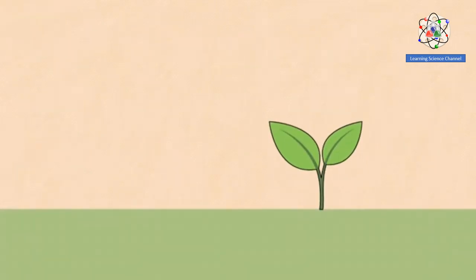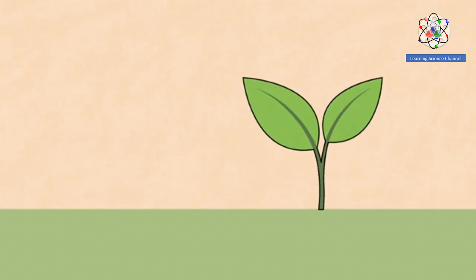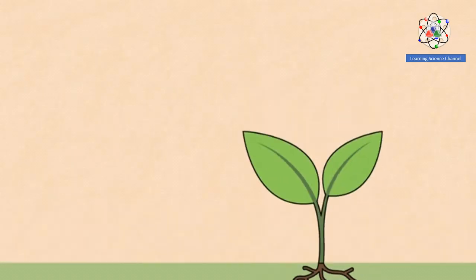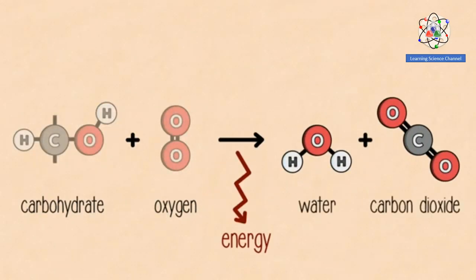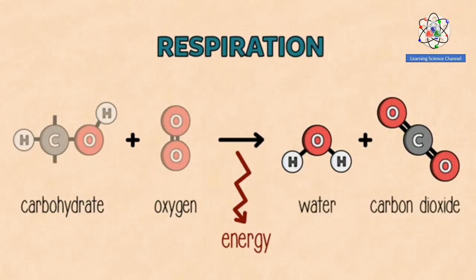Energy is now stored, and living things can use the carbohydrates to build their bodies and structures. To obtain energy, they simply reverse this reaction, letting the oxygen and the carbohydrate rejoin, forming carbon dioxide and water all over again. And this is respiration.